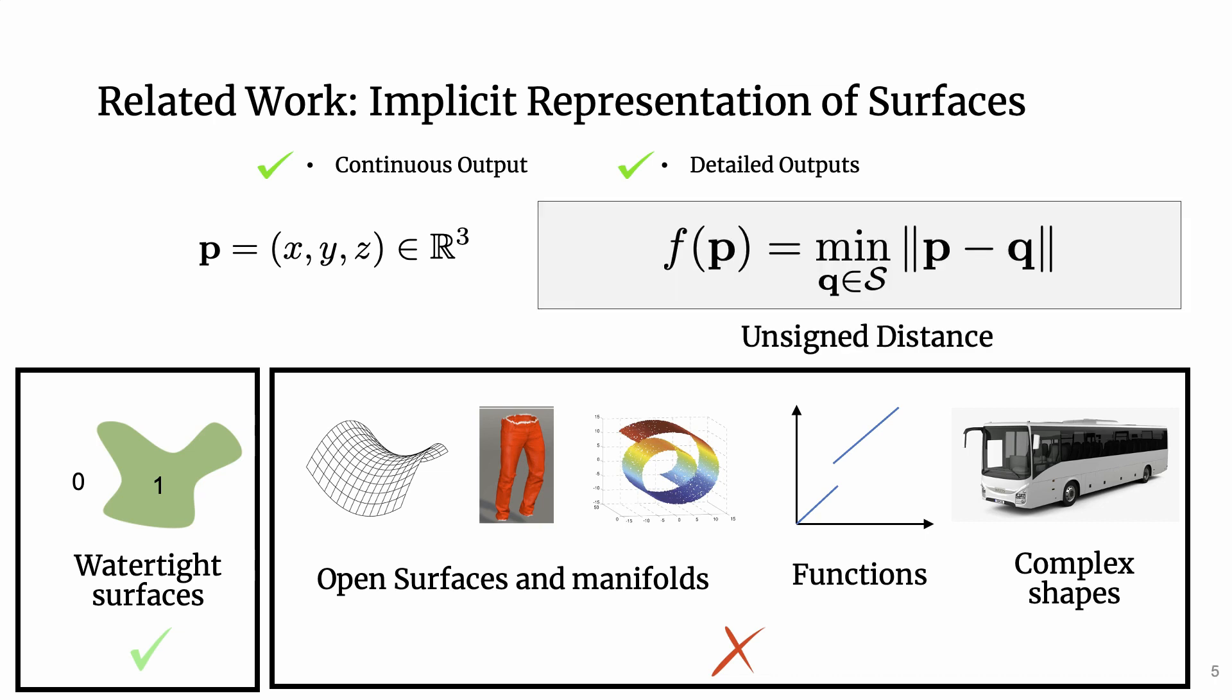To tackle this problem, we propose a simple change in the output representation. Instead of predicting if a point is inside or outside, we predict the distance to the closest surface point. This distance exists for all surfaces and allows us to represent arbitrary shapes.